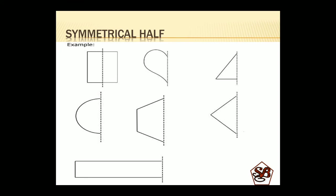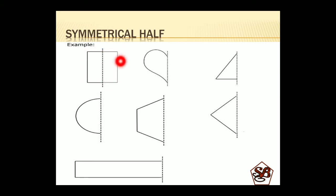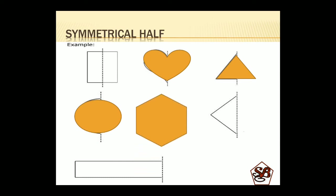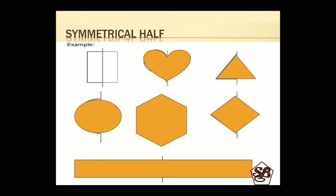These are the symmetrical halves, also called mirror images — images that are exactly the same on both sides of the line of symmetry. Let us try to complete the one given in the example. The first one is already done — it is a square which is exactly the same on both sides. The next one completes a heart, the next one completes a triangle, and the last one is a rectangle, where we have drawn the other half which completes the figure exactly the same.